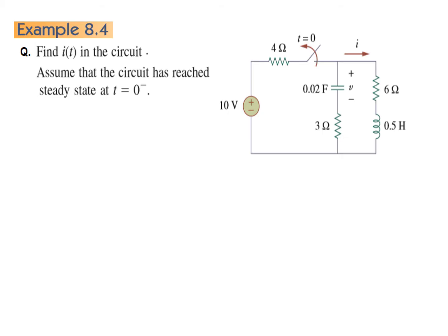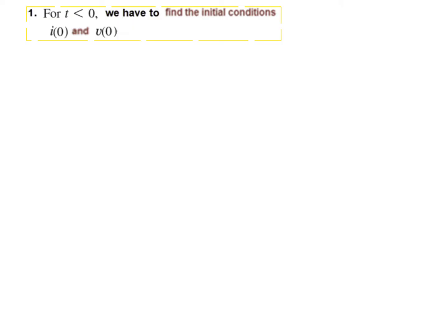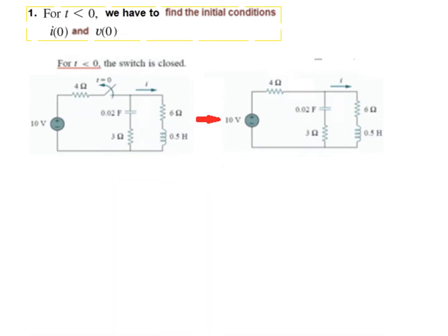Here is the first problem. We have to find i(t), the current through the circuit. Assume the circuit has reached steady state at t equals 0 minus, meaning before the switch opens. The first step is finding i(0) and v(0) for t less than 0. This is the circuit for t less than 0 — the switch is connected and will open at t equals 0. Since the circuit was in steady state, the capacitor is fully charged and behaves like an open circuit, and the inductor behaves like a short circuit.